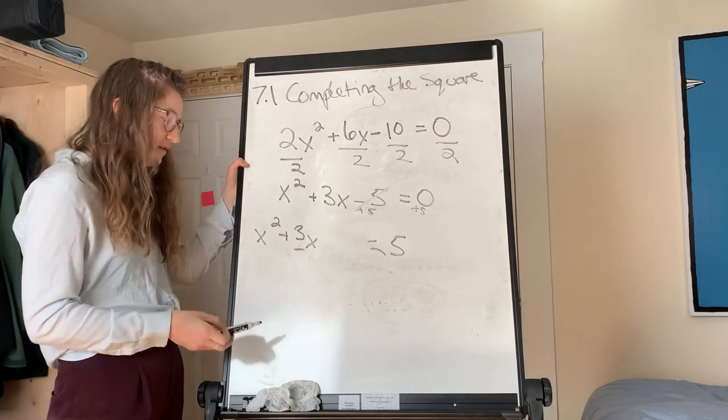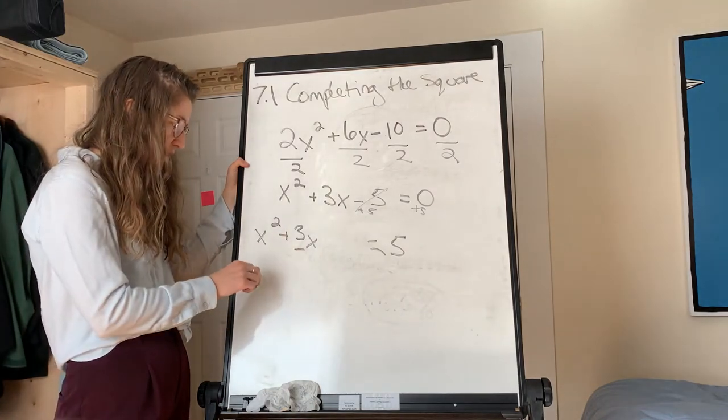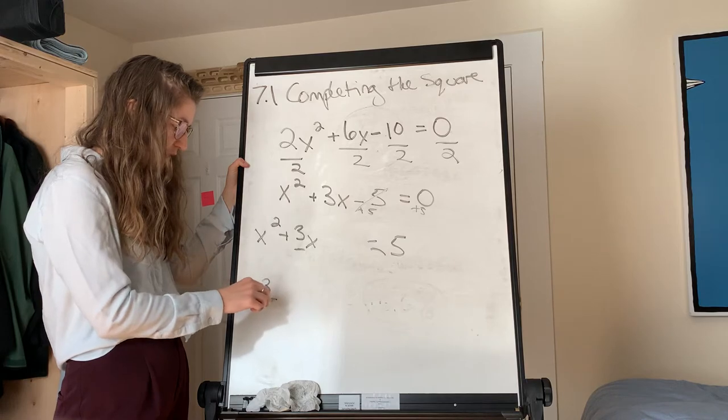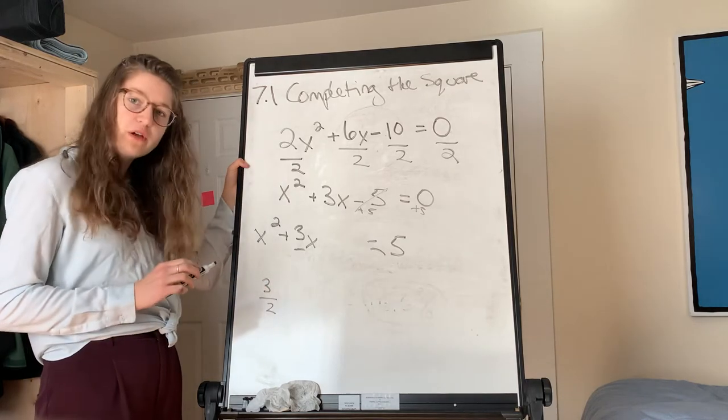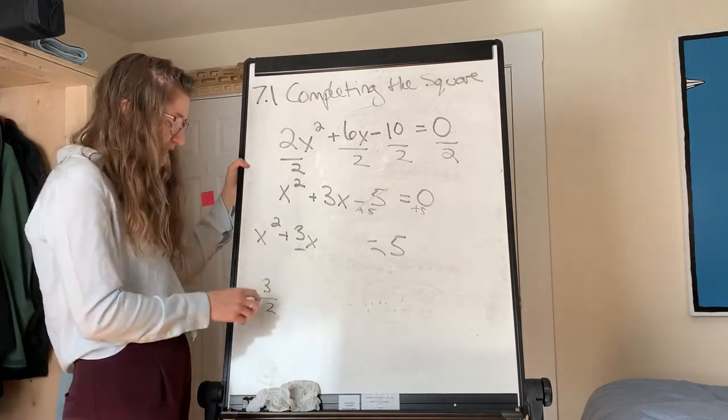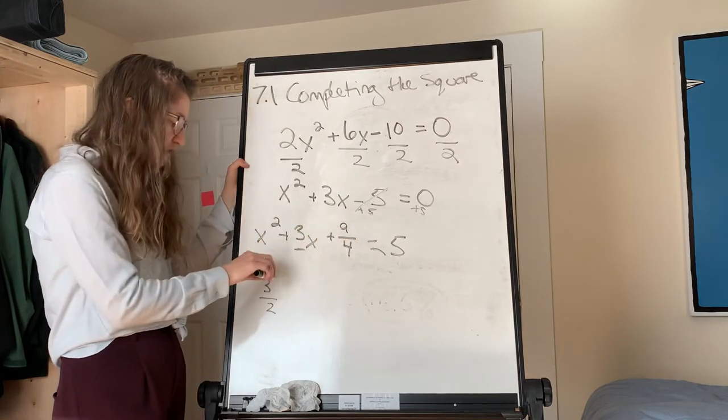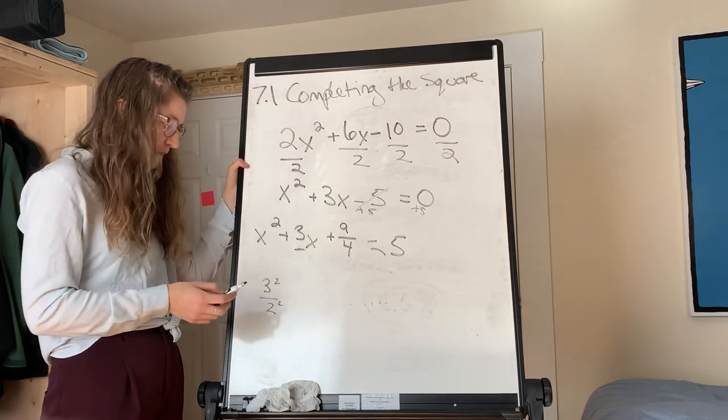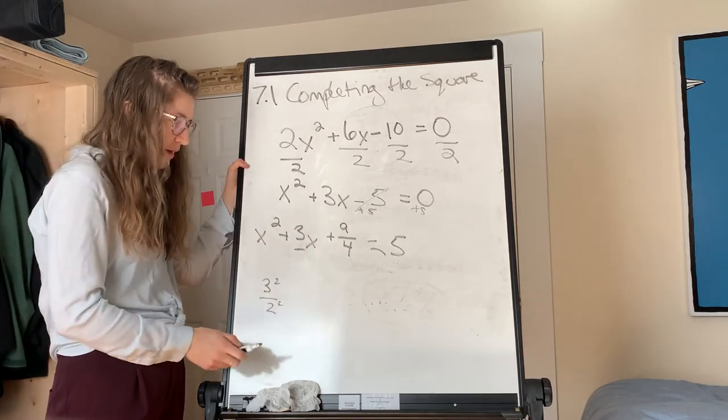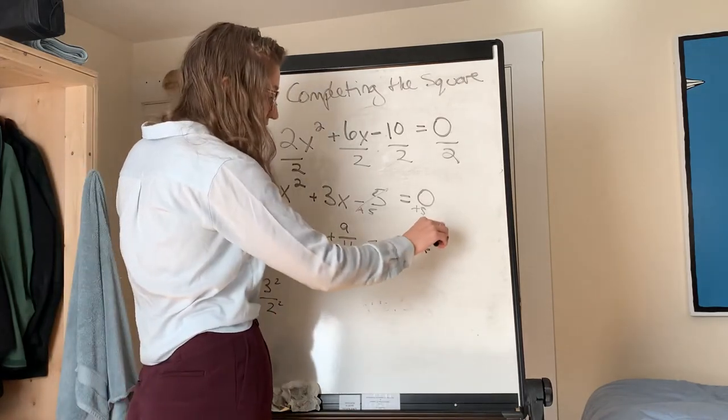So 3 divided by 2 is 1.5. I'm going to write it as 3 over 2. And then 3 over 2 squared is 9 over 4. Remember that you can square the numerator and square the denominator. So 9 fourths. And then I need to add 9 fourths to the other side too.